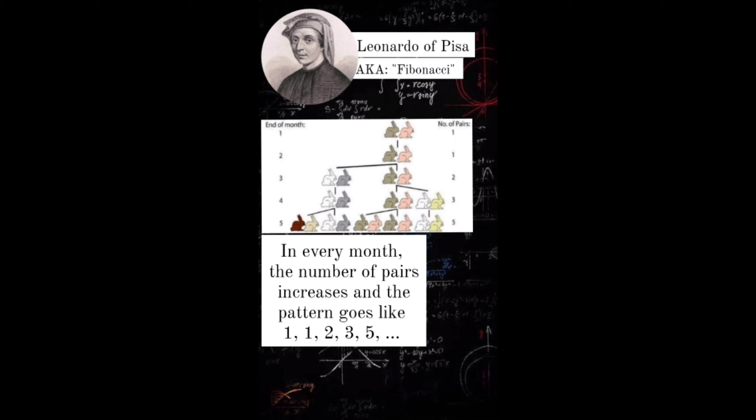Fibonacci sequence was the outcome of a mathematical problem about rabbit breeding. In every month, the number of pairs increases and the pattern goes like 1, 1, 2, 3, 5.